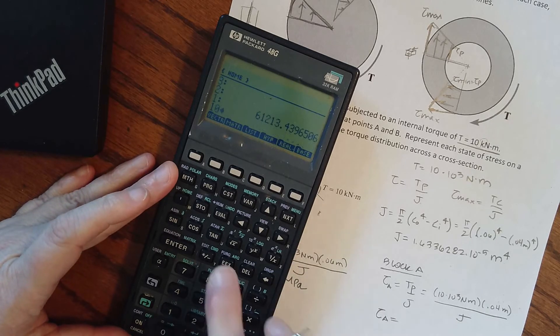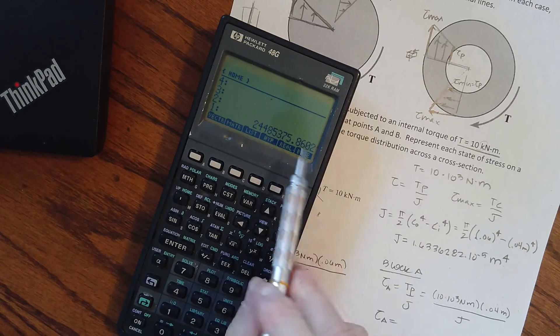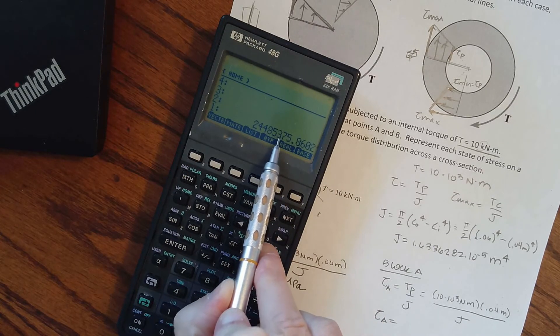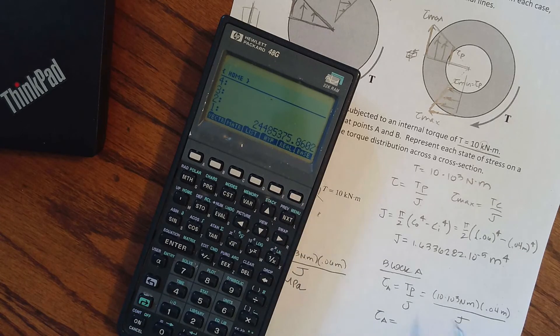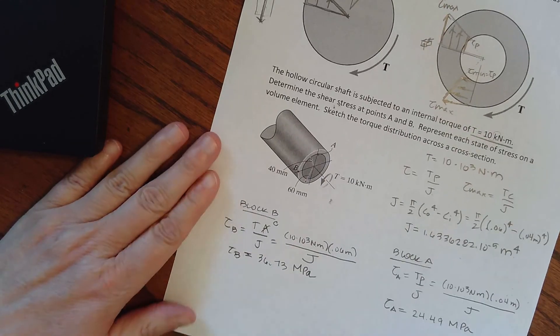So our shear stress at A, are we expecting it to be smaller or bigger? I have 10 times 10 to the third times 0.04 times, and this time I get a very large number. So I have 24.49 mega pascals, and we expect it to be smaller because it's on the inside.